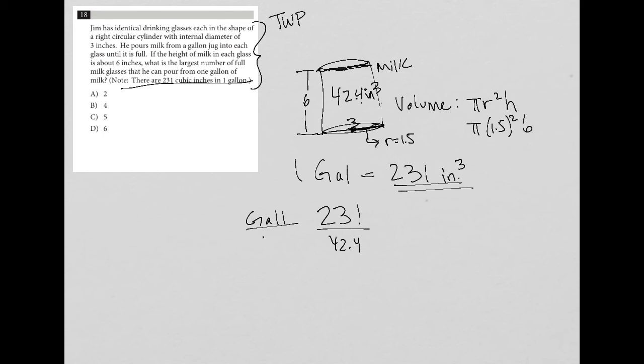So the volume of the glass is 42.4, the volume of the gallon is 231. So let's just do that and see what we get. So I get 231 divided by 42.4, and I am getting 5.45, basically.